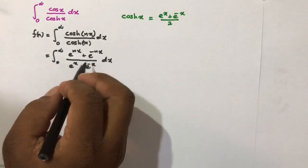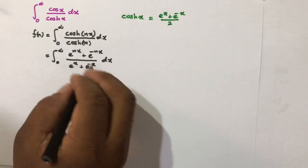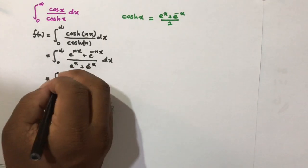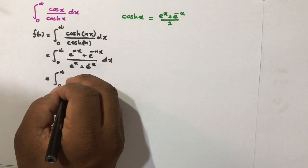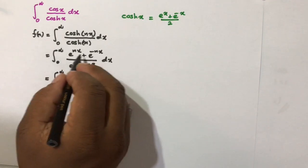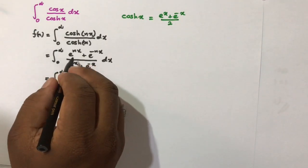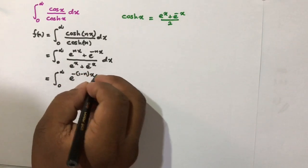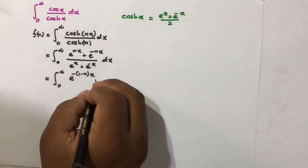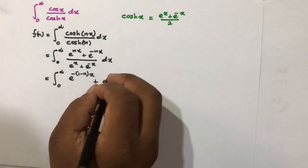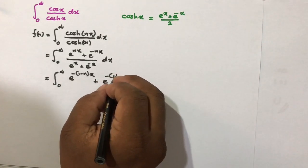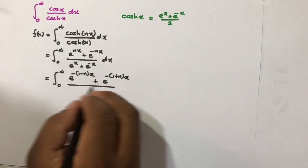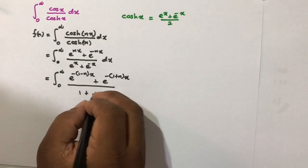Now I am going to divide both the numerator and denominator by e^x. So we get: e^{nx}/e^x = e^{(n-1)x}, giving e^{-(1-n)x} plus e^{-(1+n)x} in the numerator, over 1 + e^{-2x} in the denominator, dx.